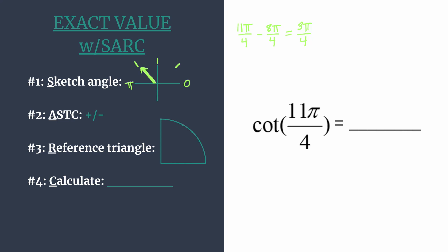Now we can decide: should our final answer be positive or negative? Doing it now ensures we won't have to calculate with negative values later. ASTC is an acronym — think 'all students take classes.' Starting from quadrant 1, all trig functions are positive. In quadrant 2, only sine and cosecant are positive. In quadrant 3, tangent and cotangent are positive. In quadrant 4, cosine and secant are positive. Since we're in quadrant 2 and we're finding the cotangent, our final answer will be negative.